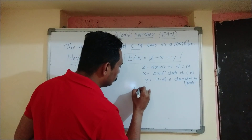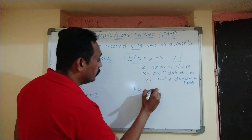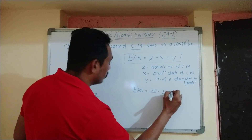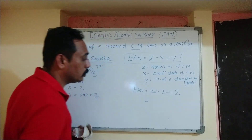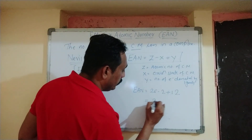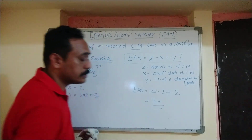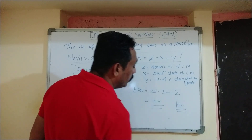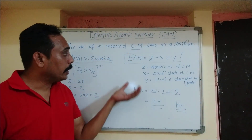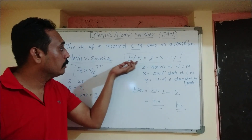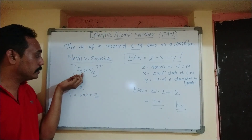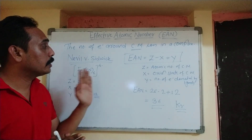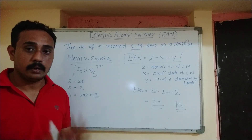EAN is equal to Z minus X plus Y, that is 26 minus 2 plus 12, which is equal to 36. So 36 is the atomic number of krypton. This is the effective atomic number of the complex [Fe(CN)₆]⁴⁻, meaning the number of electrons present around the central metal in a complex.